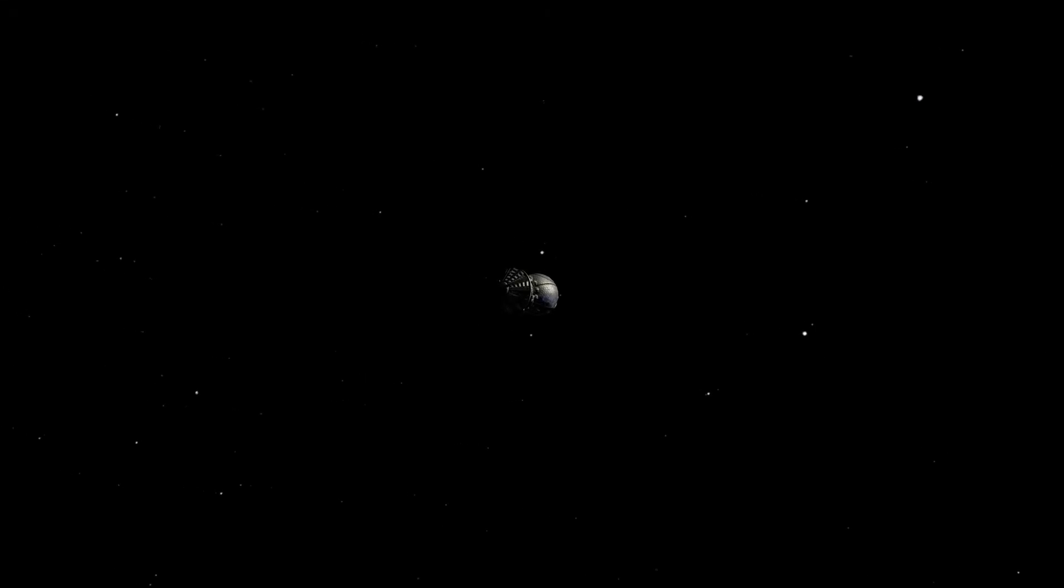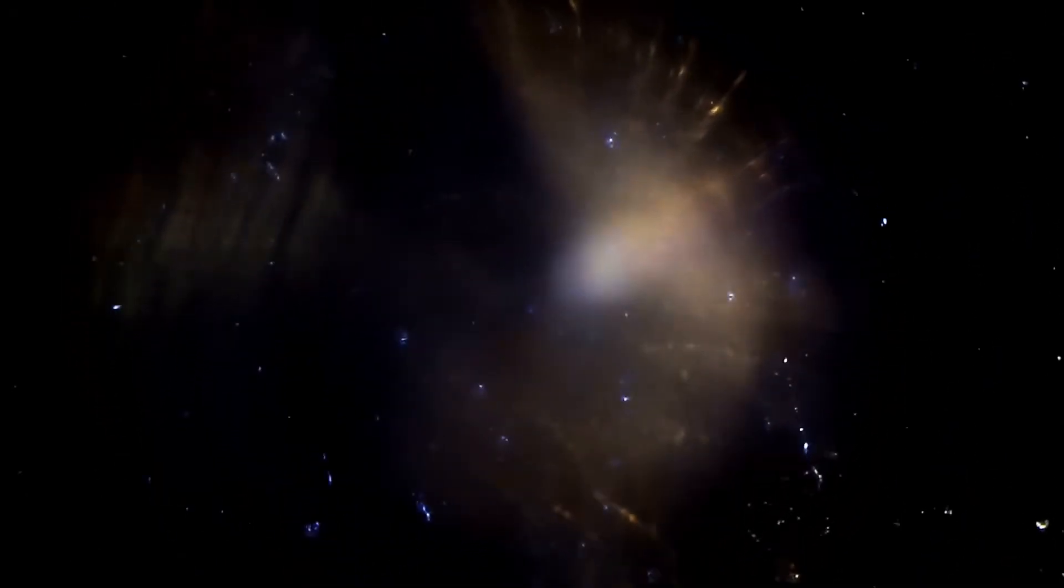Something just broke the rules of the solar system. A massive interstellar object just changed course - not from gravity, not from gas, but from something we can't explain. No comet this big should move like this. Scientists are stunned. If this isn't a glitch, what force is rewriting the cosmos?